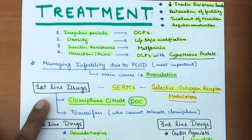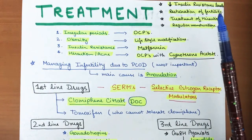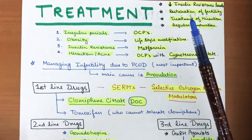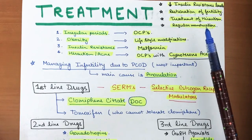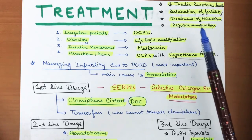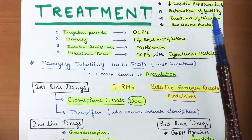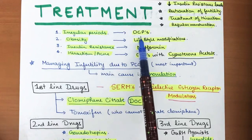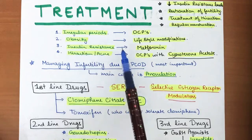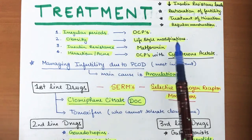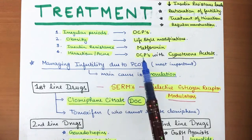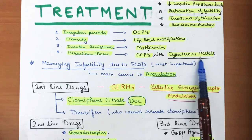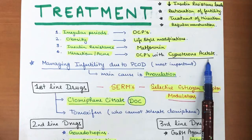The main goals of treatment are: to decrease insulin resistance, restore fertility, treat hirsutism, and achieve regular menstruation. For irregular periods, oral contraceptive pills (OCPs) can be given. For obesity, lifestyle modifications are advised. For insulin resistance, metformin is recommended. For hirsutism or acne, OCPs combined with cyproterone acetate should be given.